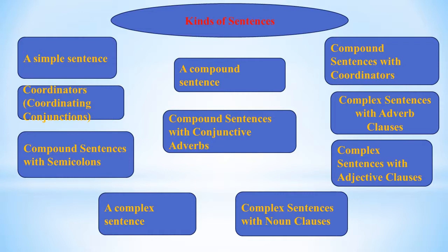The four basic kinds of sentences in English are simple, compound, complex, and compound-complex. The kind of sentence is determined by the kind of clauses used to form it. A simple sentence is one independent clause — for example: 'Fresh water boils at 100 degrees Celsius at sea level.'